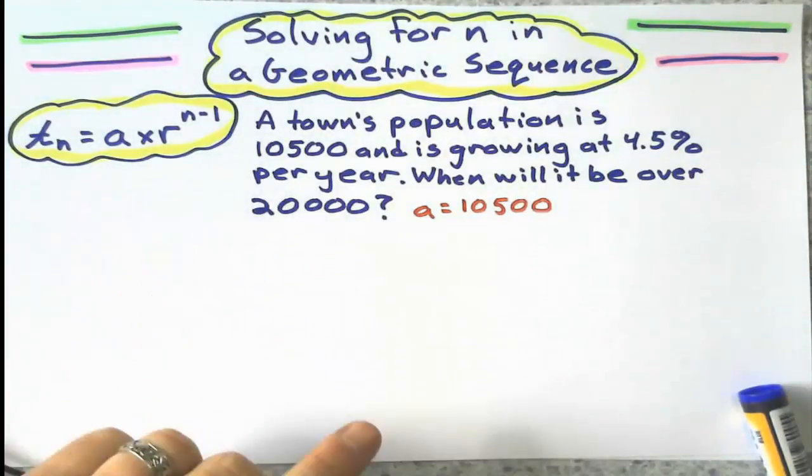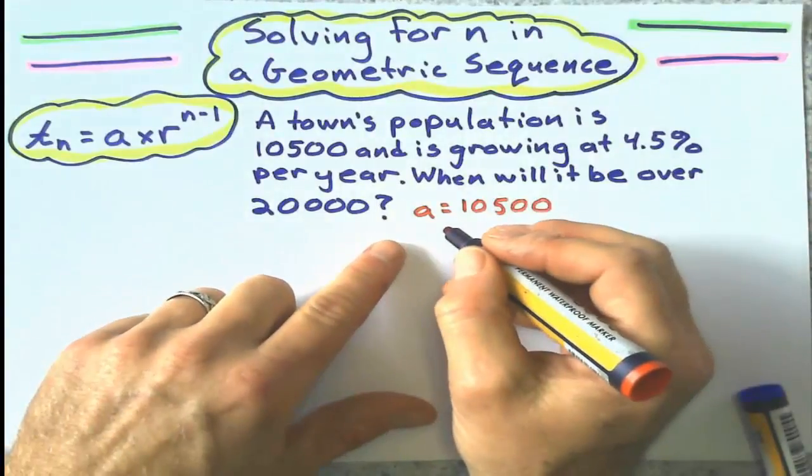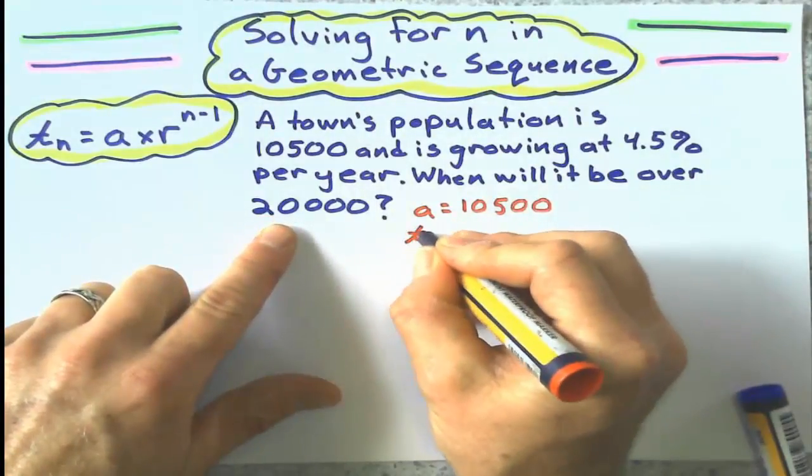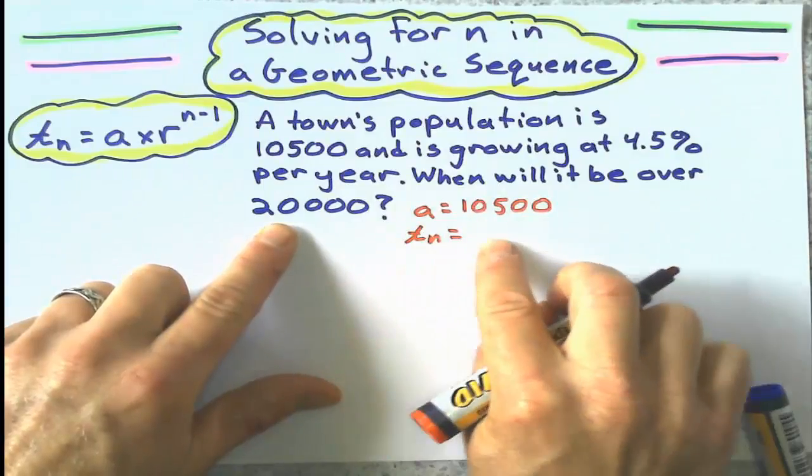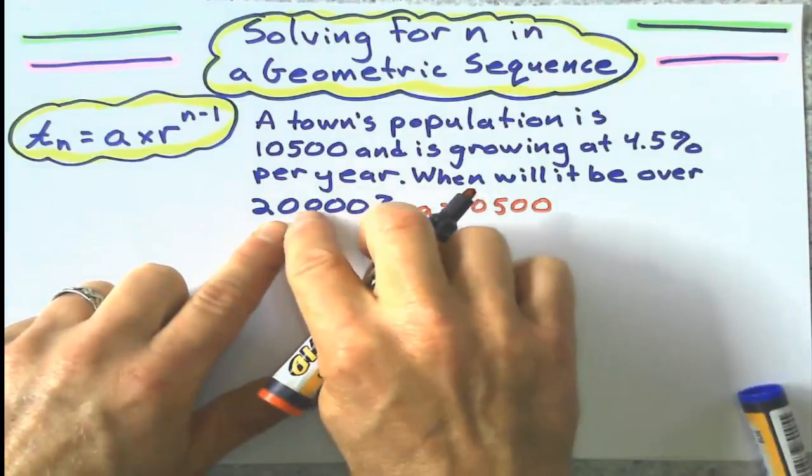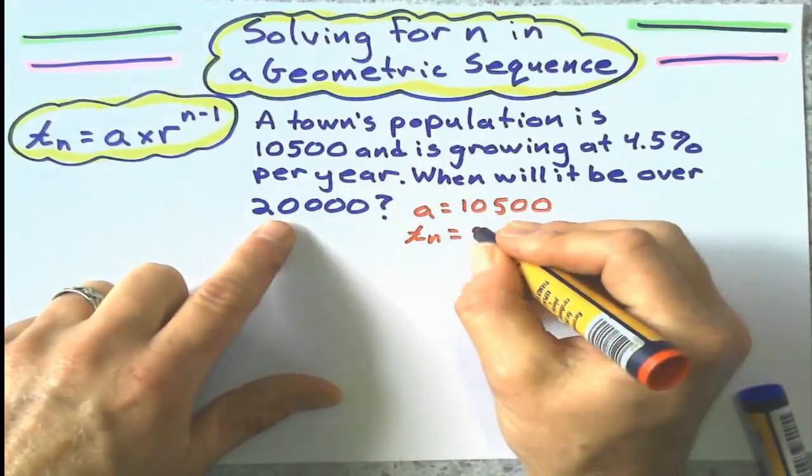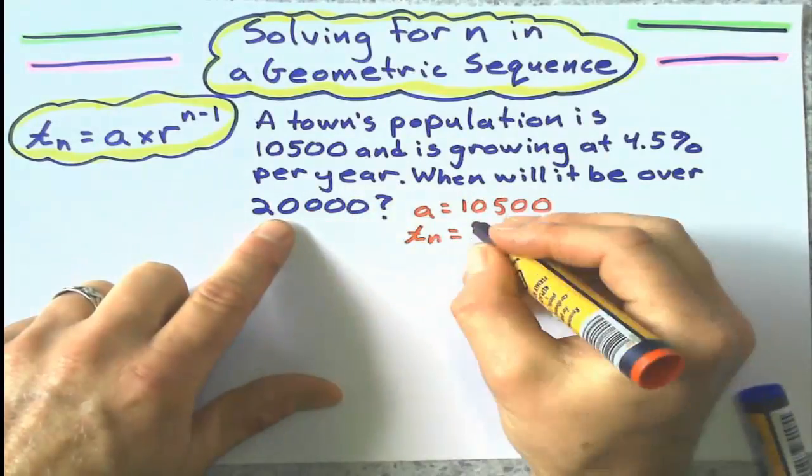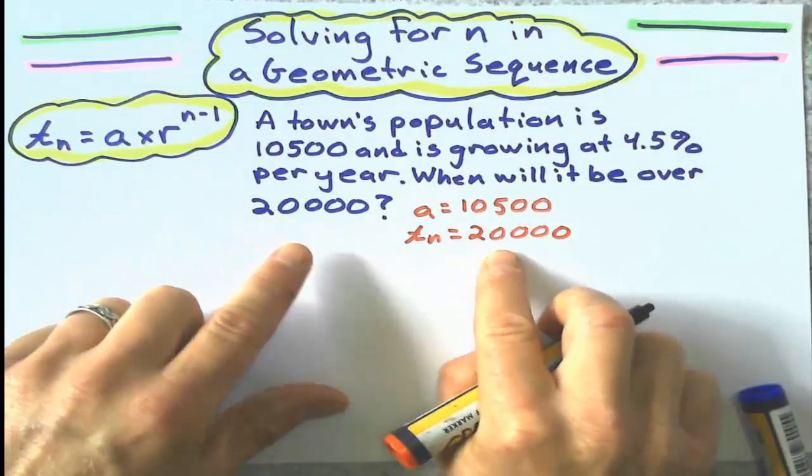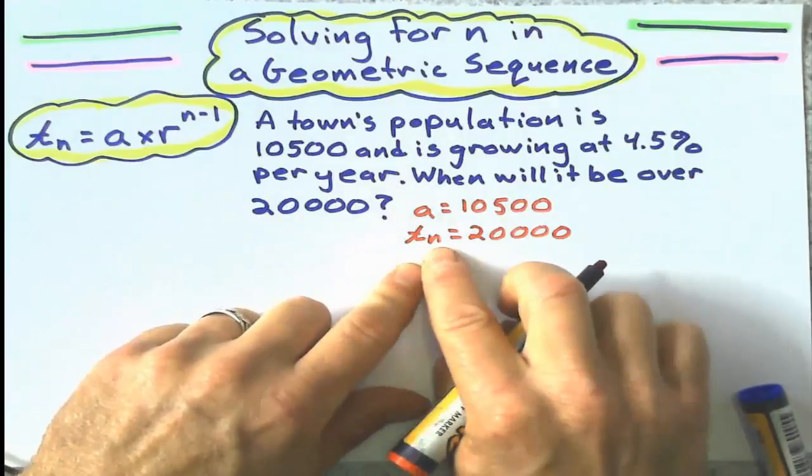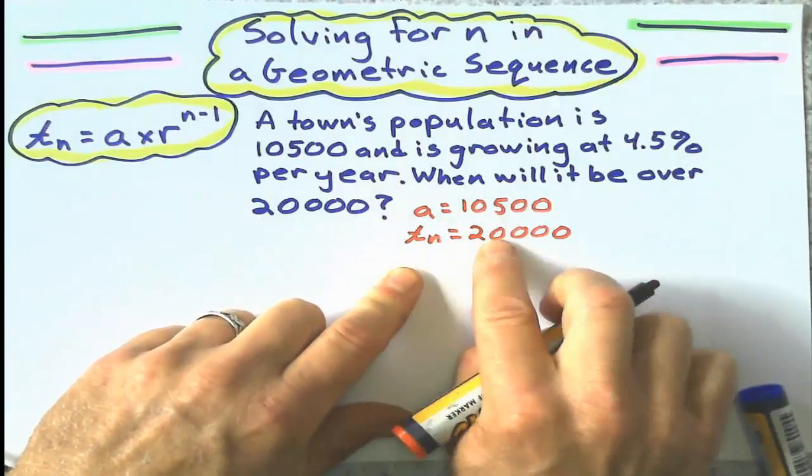And we know, we also know that after a certain number of years, I don't know how many years, but after a certain number of years, when is it going to be 20,000? So that is t_n. That 20,000 is the term, but I don't know how many years it's going to take to get there. And that's what we're going to figure out.